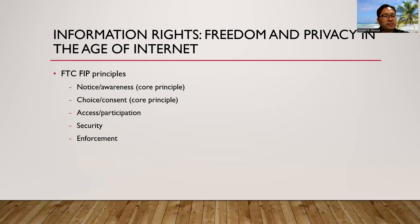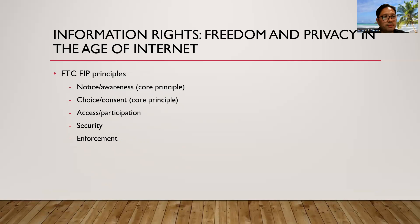The Federal Trade Commission's Fair Information Practice Principles are guidelines representing widely accepted concepts concerning fair information practice. First is notice and awareness: consumers should be given notice of an entity's information practices before any personal information is collected from them. This requires that a company explicitly notify consumers of: identification of the entity collecting the data, identification of the uses to which the data will be put, identification of any potential recipients of the data, the nature of the data collected, the means by which it is collected, whether provision of the requested data is voluntary or required, and the steps taken by the data collector to ensure the confidentiality, integrity, and quality of the data.